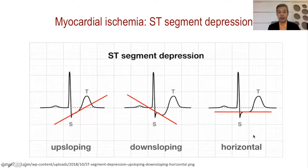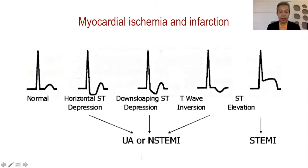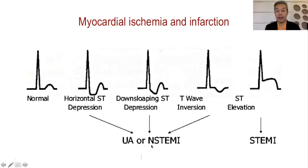ST segment depression can be physiologic during stress testing and exercise, but these are abnormal findings. The two ischemic changes include down-sloping and horizontal depression, and of course there can be an isoelectric ST segment with deep T-wave inversion, which is due to unstable angina or non-ST-elevation myocardial infarction.